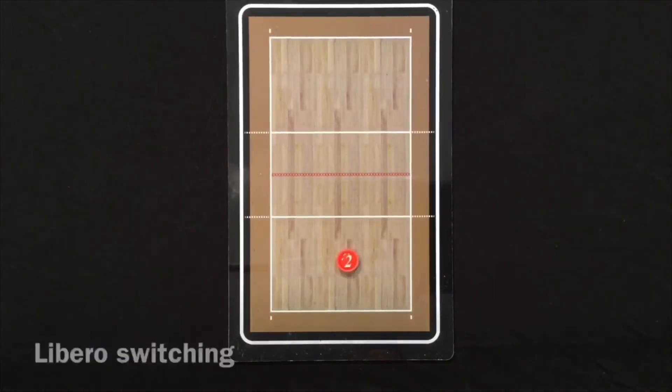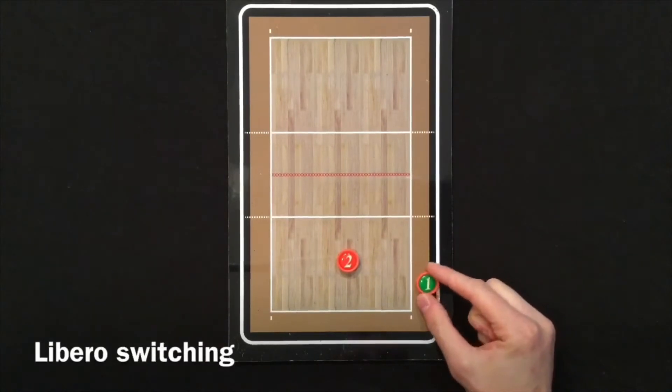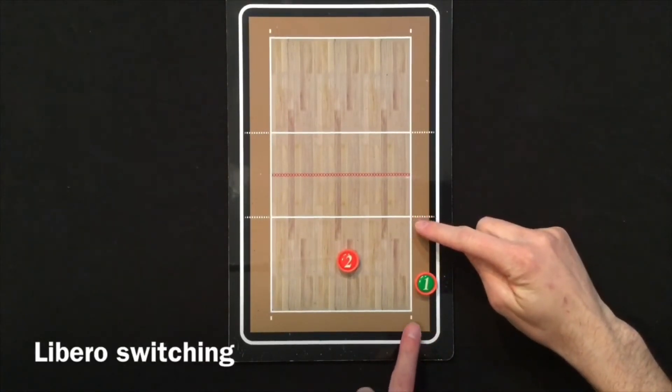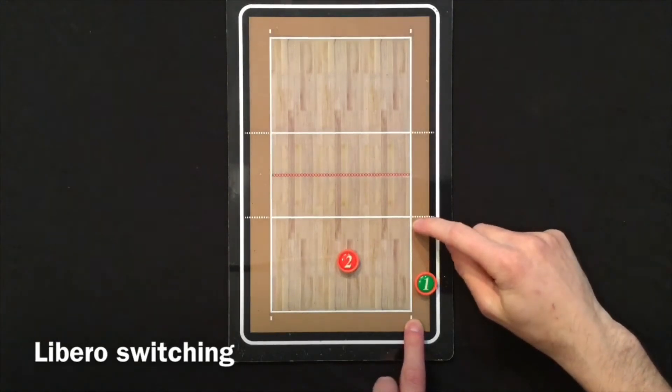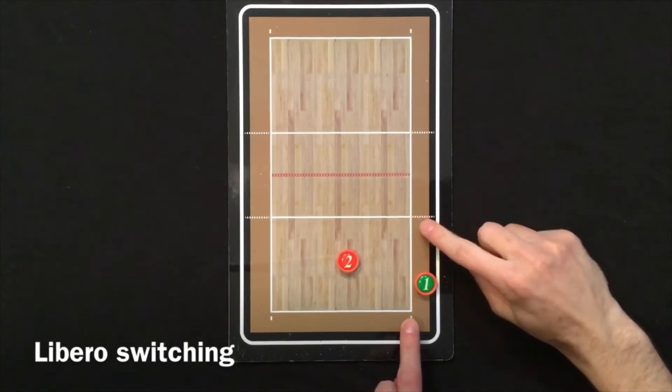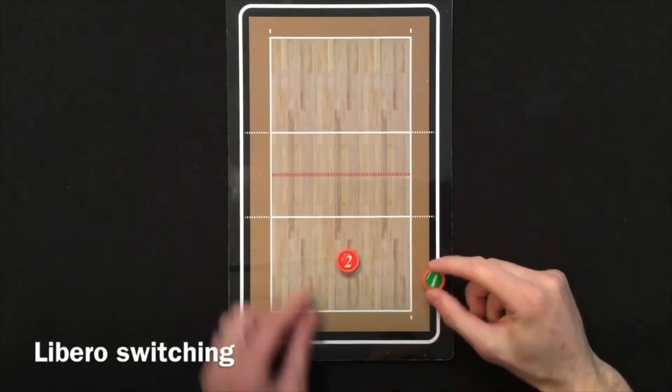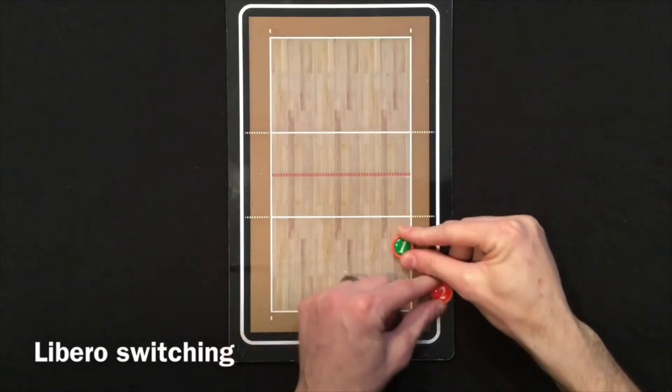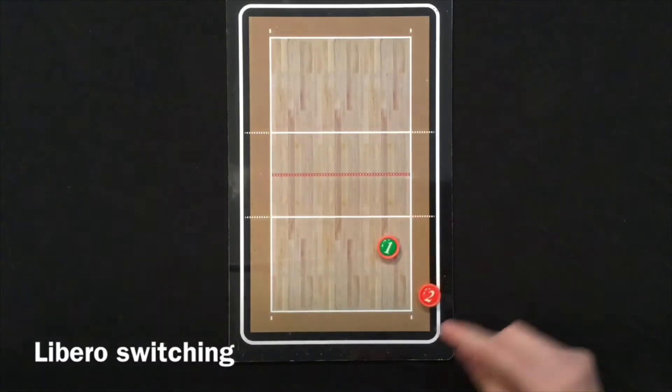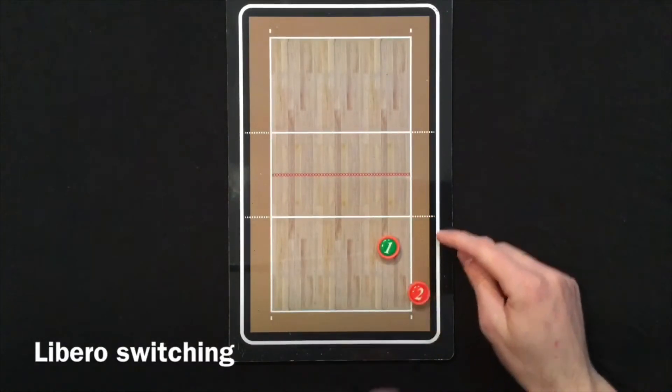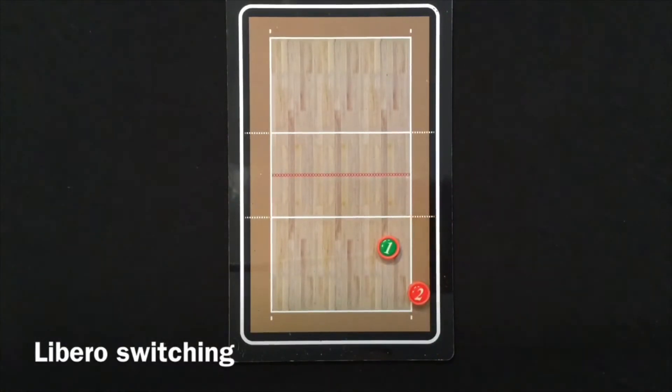If your team is playing with a libero, the libero can only enter and exit the game between the ten foot line and the sideline end line corner. So this needs to take place between that ten foot line and the end line. It cannot be in the substitution zone since it is not a substitution.